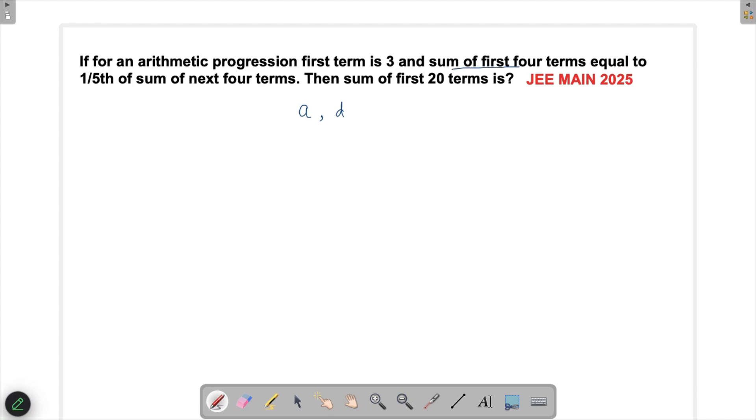The sum of the first four terms would be n/2 times [2a + (n-1)d]. This is the formula for summation. For the first four terms, that's 4/2 times [2a + 3d].